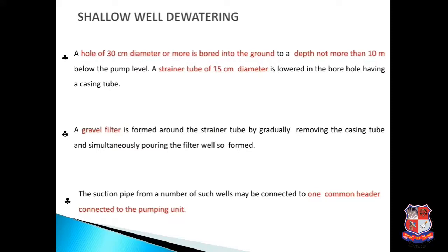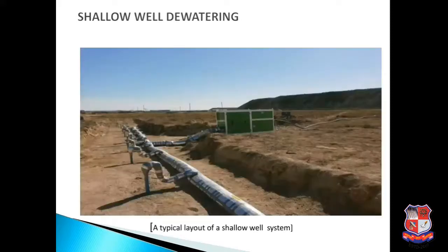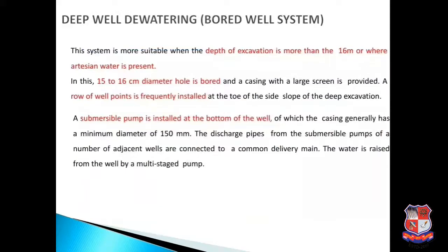Next is shallow well dewatering. A hole of 30 centimeter diameter or more is bored into the ground to a depth not more than 10 meters below the pump level. A strainer tube of 15 centimeter diameter is lowered into the borehole with a casing tube. A gravel filter is formed around the strainer tube by gradually removing the casing tube while simultaneously pouring in filter material. A suction pipe from a number of such wells may be connected to a common header connected to a pumping unit.